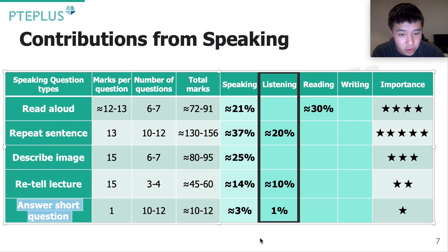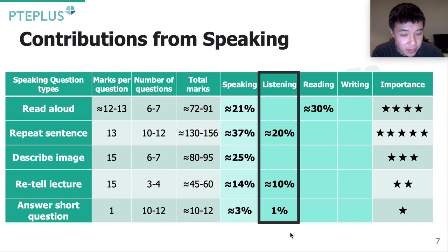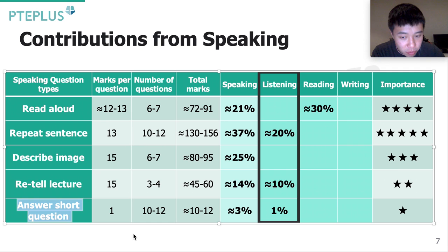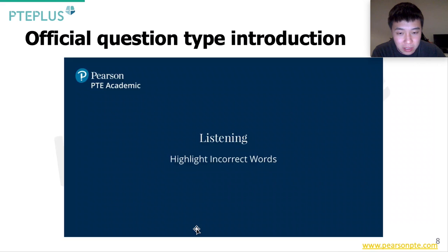And for the answer choice question, even though it's not a lot, for anyone targeting 79 or above, you shouldn't skip this question. It's still contributing to your speaking and your listening score at the same time, and it also contributes to your vocabulary score as well. So you definitely want to at least get half of them correct — get 100% of them correct if you can.